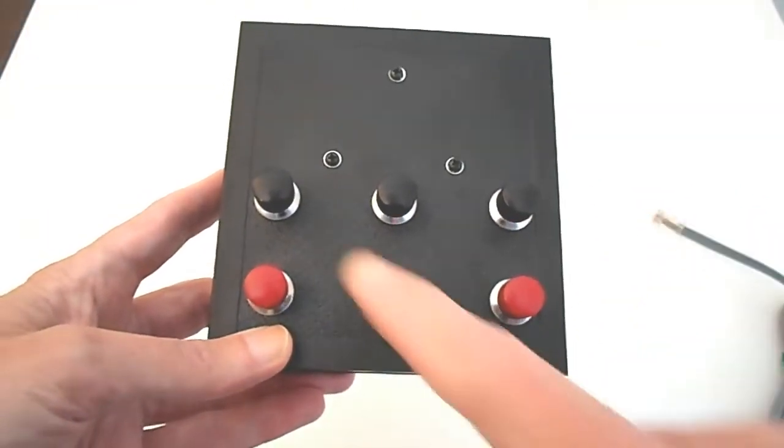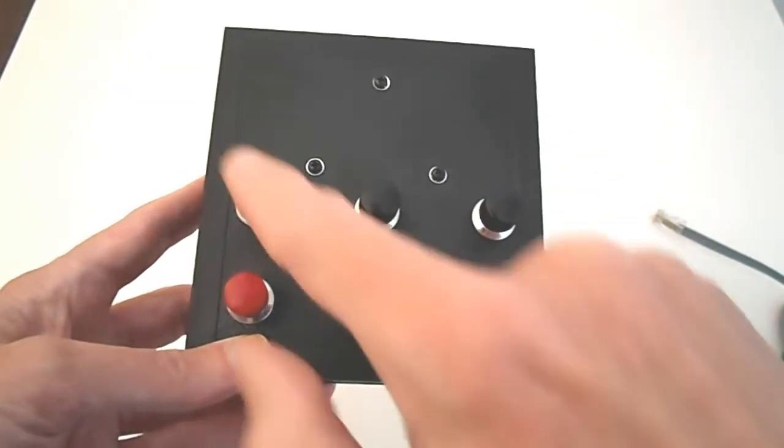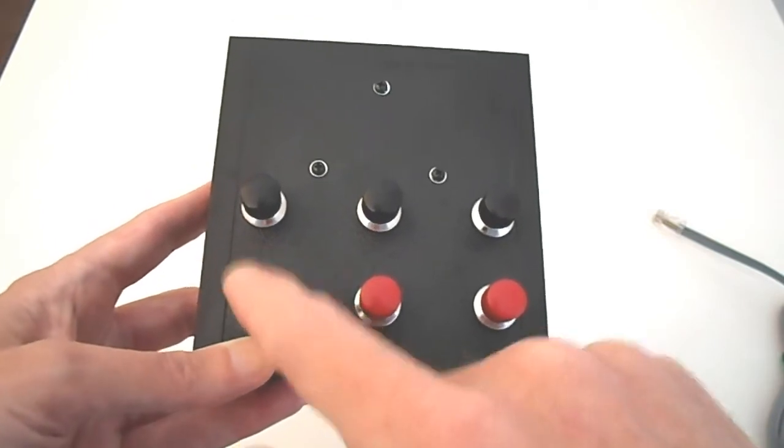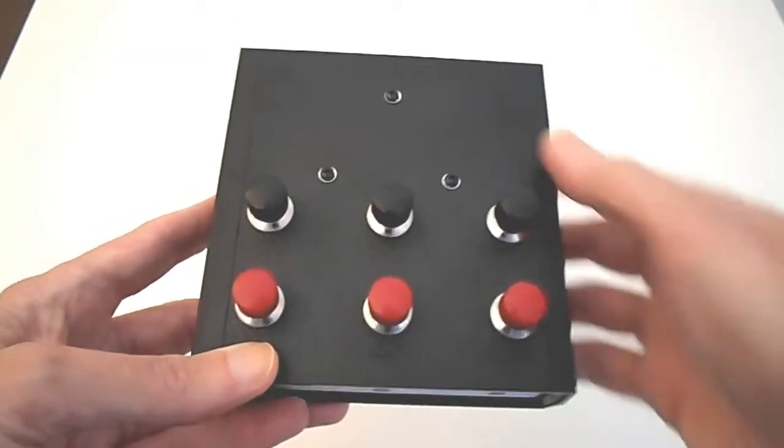Now, the top row in black are for setting timer hours, minutes, and seconds, and the bottom row in red are the action buttons: clear, reset, and start-stop.